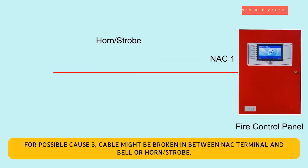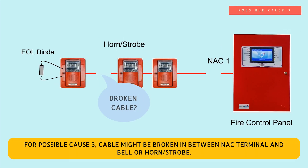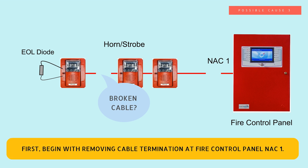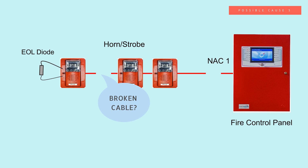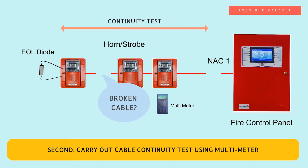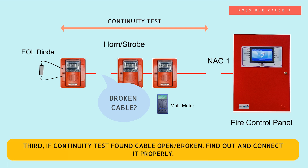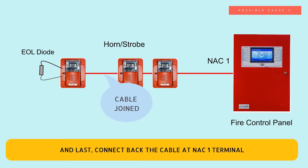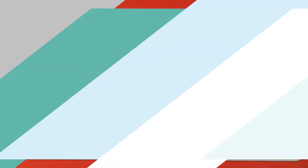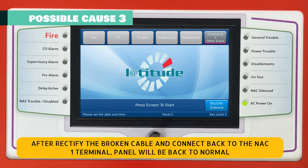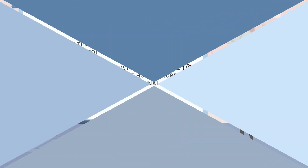For possible cause three — cable might be broken between the NAC terminal and the bell or horn strobe. First, remove the cable termination at the fire control panel NAC1. Second, carry out a cable continuity test using a multimeter. Third, if the continuity test finds the cable open or broken, locate and reconnect it properly. Finally, reconnect the cable at the NAC1 terminal. After rectifying the broken cable and reconnecting it, the panel will return to normal.